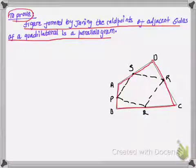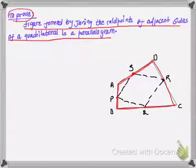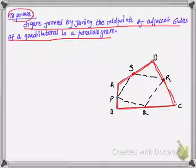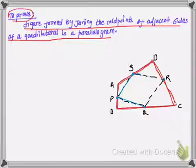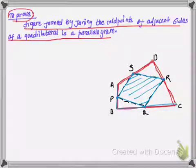Here ABCD is our quadrilateral. Point S is the midpoint of side AD, point P is midpoint of side AB, Q is midpoint of BC, and R is midpoint of DC. Now if we join all these midpoints P, Q, R and S, we get another quadrilateral, and we have to prove that this quadrilateral formed by joining the midpoints of sides of ABCD is a parallelogram.